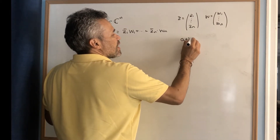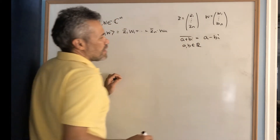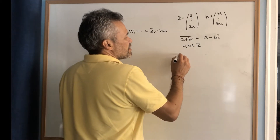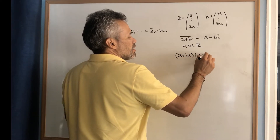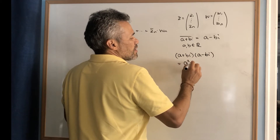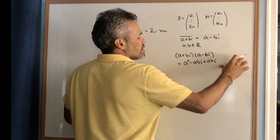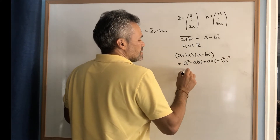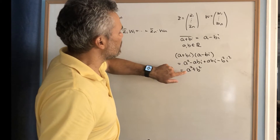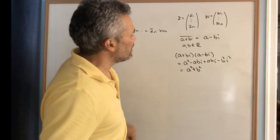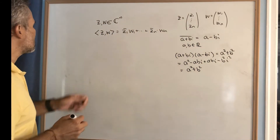Remember that the conjugate of a + bi, where a and b are real numbers, is just a − bi. An interesting property is that if you multiply a number with its conjugate, you get a² + b², which is the length squared of that complex number — and it is always a real, non-negative number.